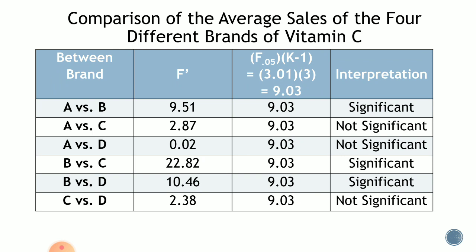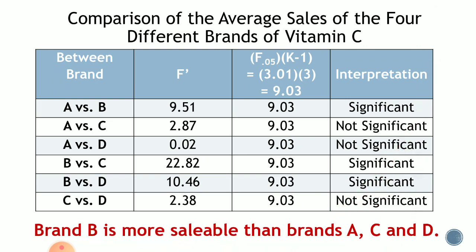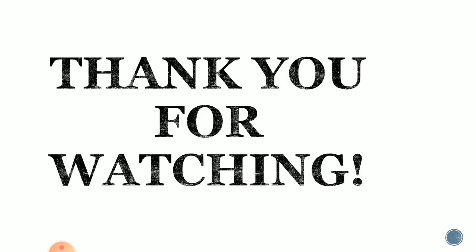As we can see in the table, there is a significant difference in sales between brands A and B, brands B and C, and brands B and D. However, brands A and C, brands A and D, and brands C and D do not significantly differ in their average sales. This implies that brand B is more saleable than brands A, C, and D. That concludes the SCIFS test.